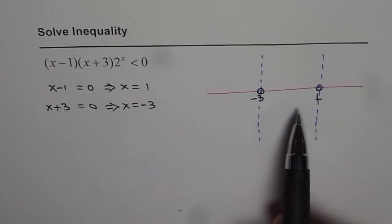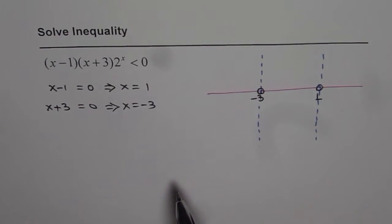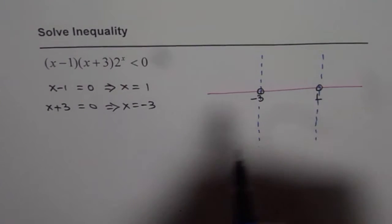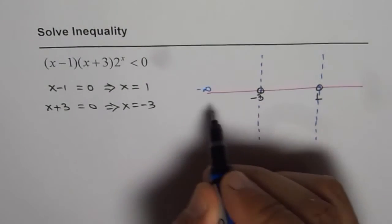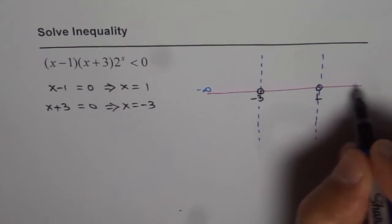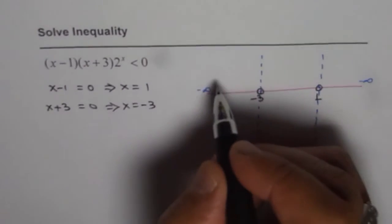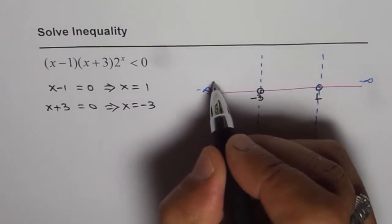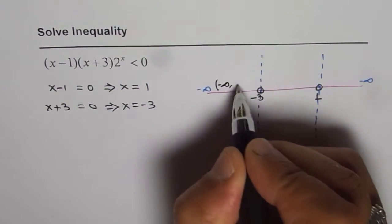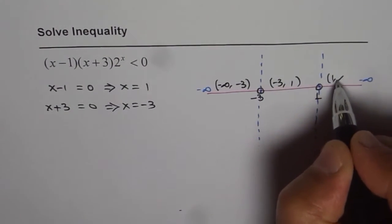This is not part of our solution but from somewhere in between we have a solution. Now how to find what is the interval? As you can see here it divides into interval from minus infinity to minus 3, then we have interval from minus 3 to 1, and then 1 to infinity. These are the three intervals.